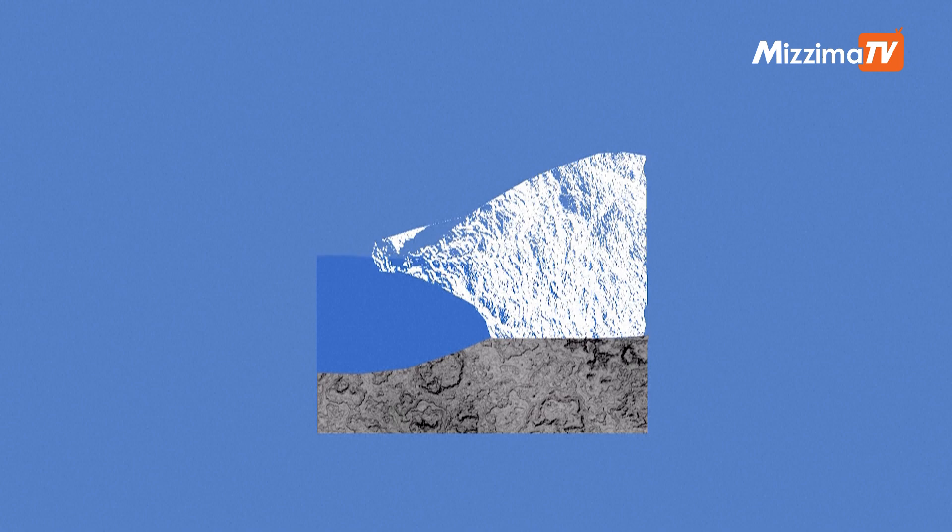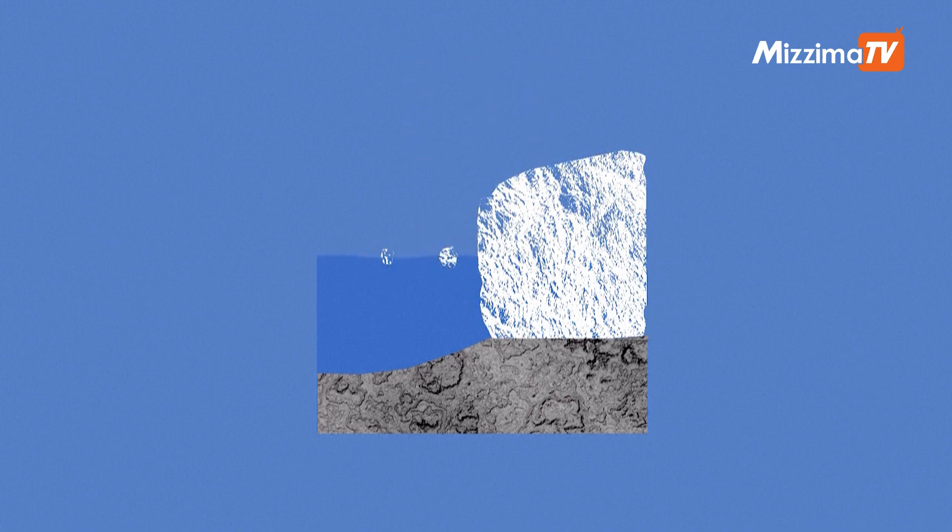A third mechanism is theorized, but it is not proven to be underway. The marine ice cliffs instability. The idea is that under the effect of heat, the ice shelves extending the ice sheets over the ocean may melt, fracture and eventually disappear.